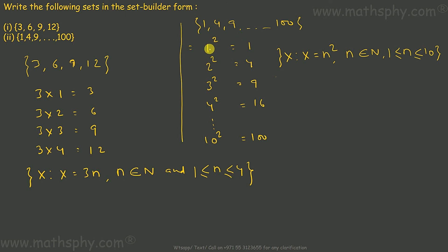And all these numbers, 1, 2, 3, 4, 5, 6 till 10, they all are natural numbers, and they are between 1 and 10, or equal to 10. All right.